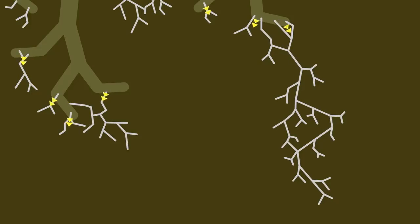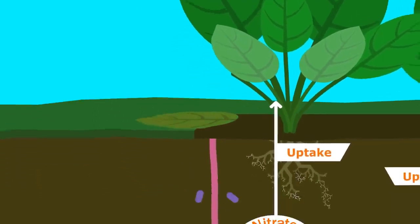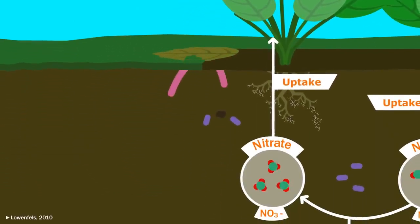Dead plant material is also rich in nitrogen and gets brought down with the help of worms, whose poop is a delicacy among nitrifying bacteria.